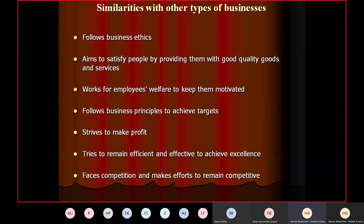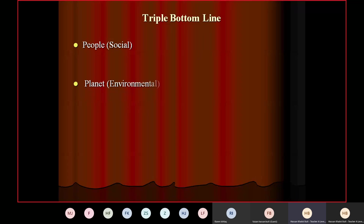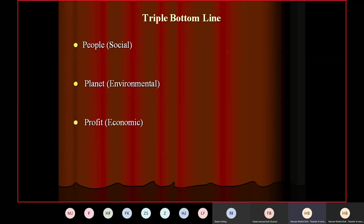Now, a very important concept: the triple bottom line. The three objectives of social enterprise are people (social), planet (environmental), and profit (economic) — and that is why they are also called P3. Triple bottom line is another name given to the objectives of social enterprise. We call it triple bottom line because there are three objectives and all three start with the letter P: people, planet, profit. We have already discussed all these objectives.